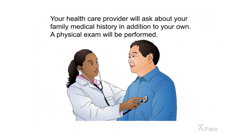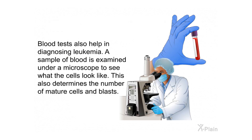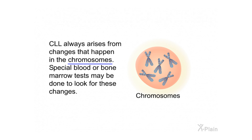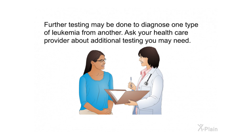Your health care provider will ask about your family medical history in addition to your own, and a physical exam will be performed. Blood tests help in diagnosing leukemia: a sample of blood is examined under a microscope to see what the cells look like and to determine the number of mature cells and blasts. If blood tests cannot diagnose the type of leukemia, bone marrow samples may be tested. CLL always arises from changes in the chromosome, so special blood or bone marrow tests may be done to look for these changes.